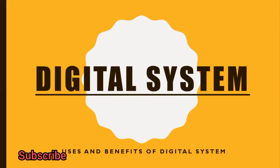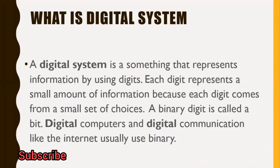Today's topic is digital systems, its uses and benefits. First of all, we will look into what is a digital system. A digital system represents information by using digits. Each digit represents a small amount of information because each digit comes from a small set of choices.